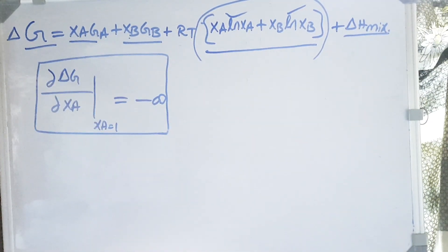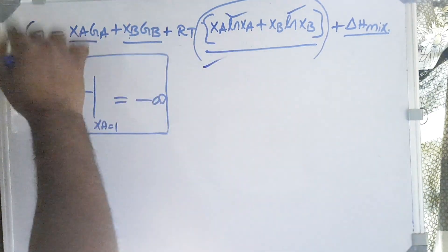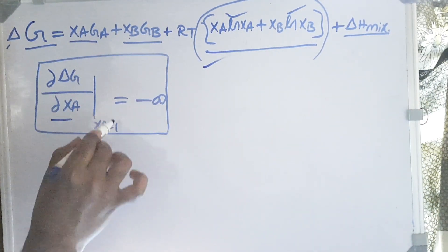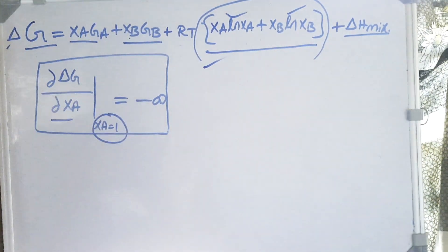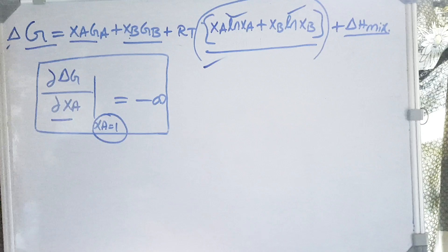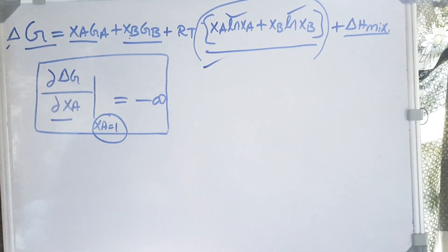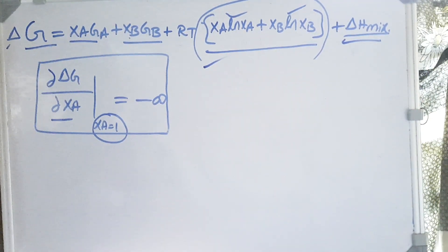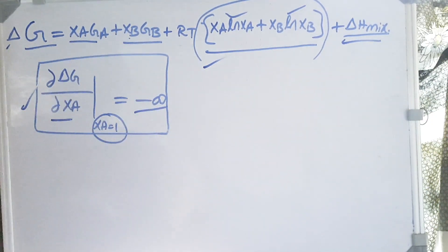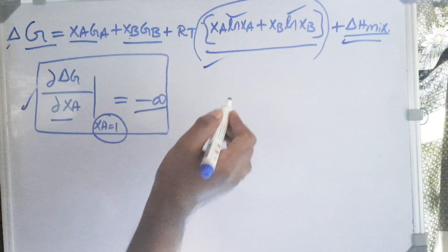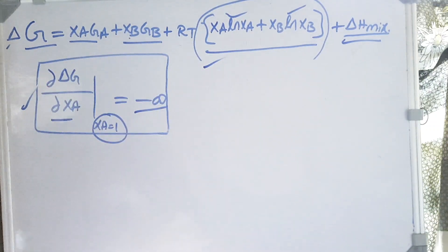If one term diverges, the function diverges. So the differentiation of delta G with respect to XA, if we are going towards 1, the value is minus infinity, which means the free energy of the system reduces drastically when we are approaching or adding small amount of solute. It doesn't matter what delta H mixing is, but initially when we are adding a small amount of solute, the free energy diverges to negative infinity, which means the system is very stable if it has a small amount of solute. System is not stable if it is 100% pure because the free energy is very high.